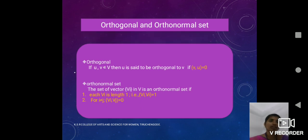Next, orthogonal means take any two non-zero elements called U and V in a vector space V. Then U is said to be orthogonal to V if it satisfies the condition U, V equal to 0.